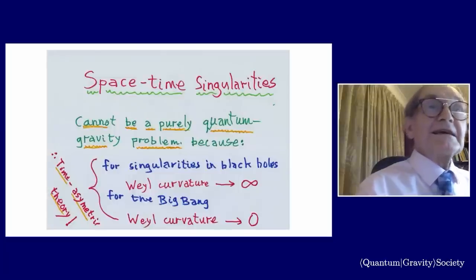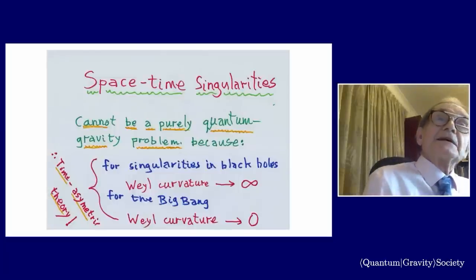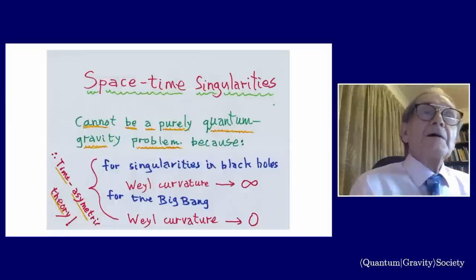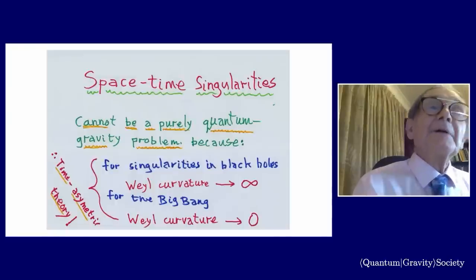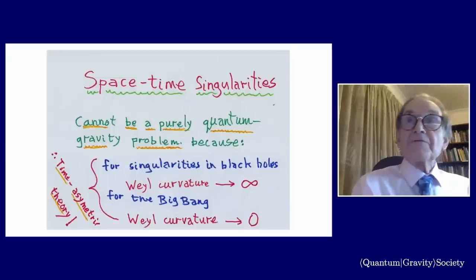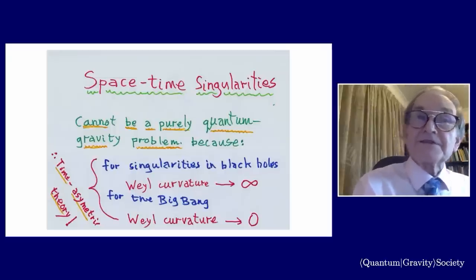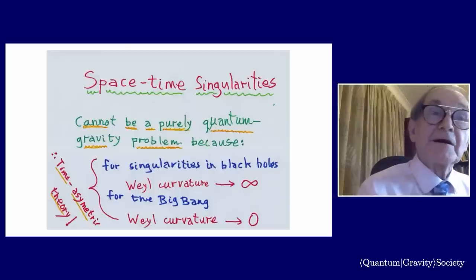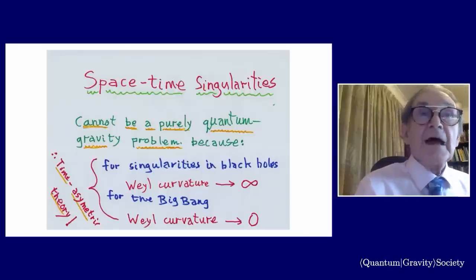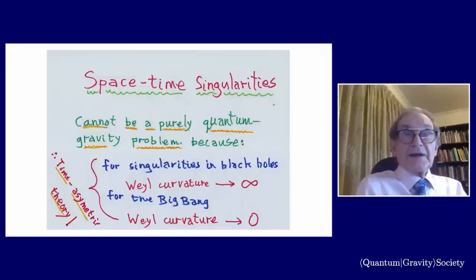So what we see is that the singularities in the universe have this very, very peculiar property. That in the future, the Weyl curvature goes wild to infinity, but for some strange reason, in the past, it goes to zero. So whatever theory you've got, if it's quantum gravity that explains it, it's got to be a very, very peculiar theory of quantum gravity, which is hugely time asymmetrical. No such theory that I've ever seen has that character. I'm going to go along a different route.